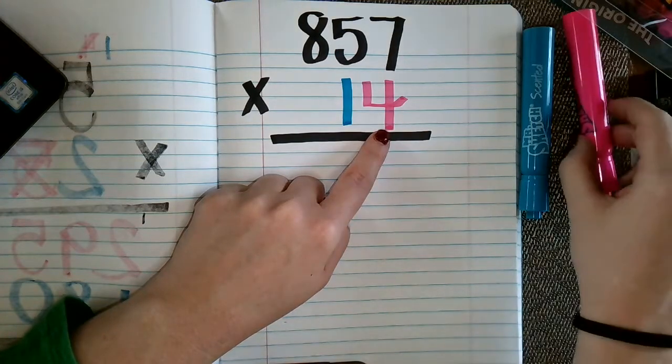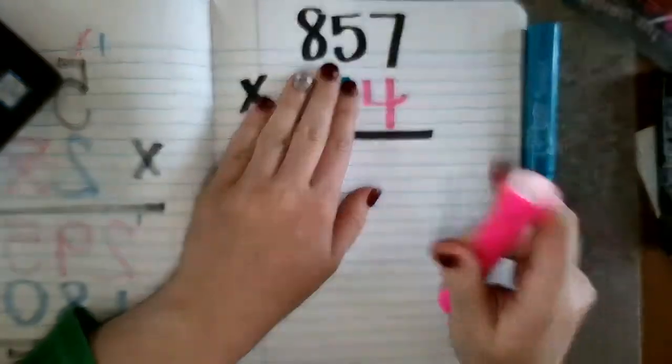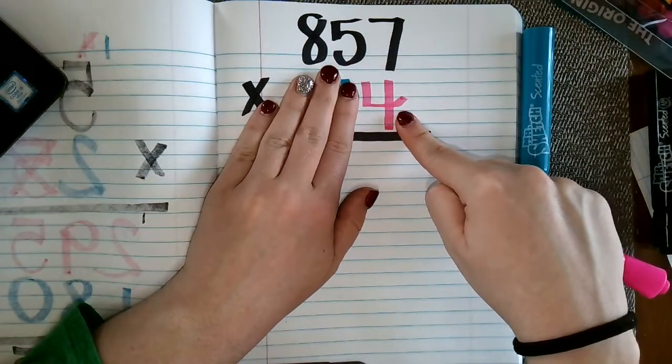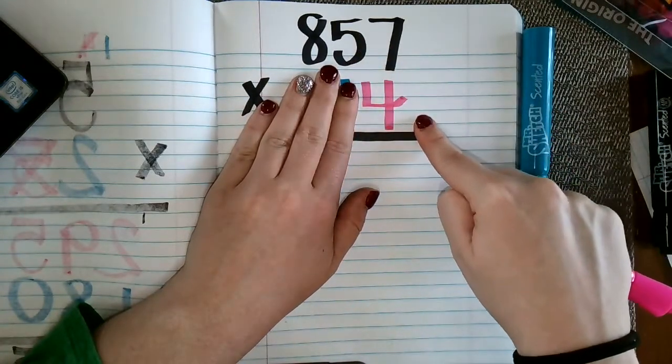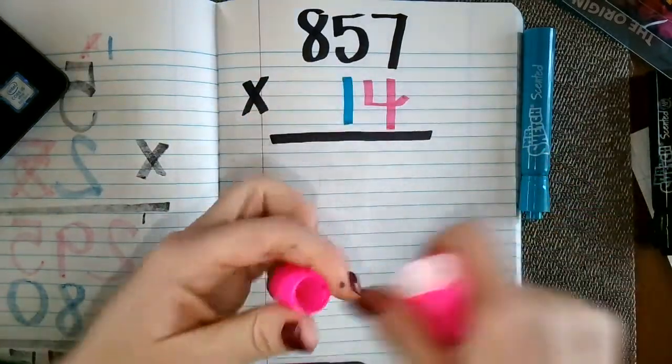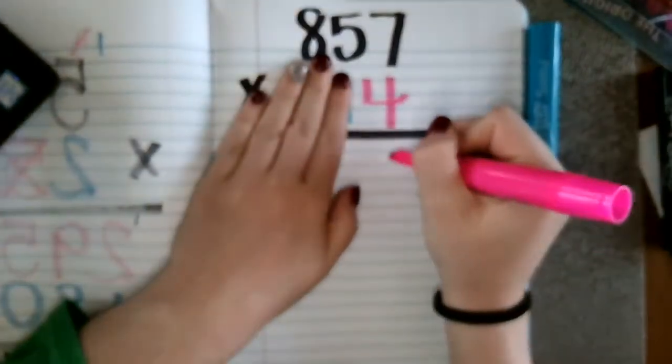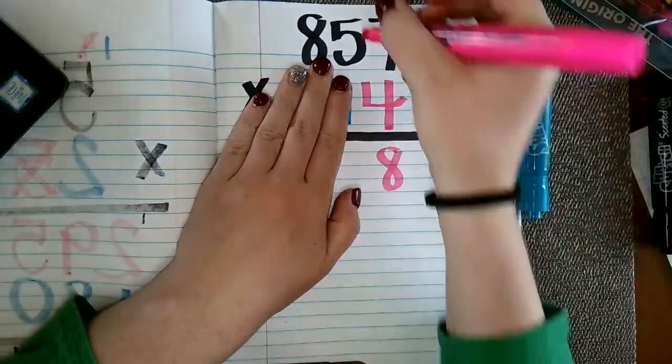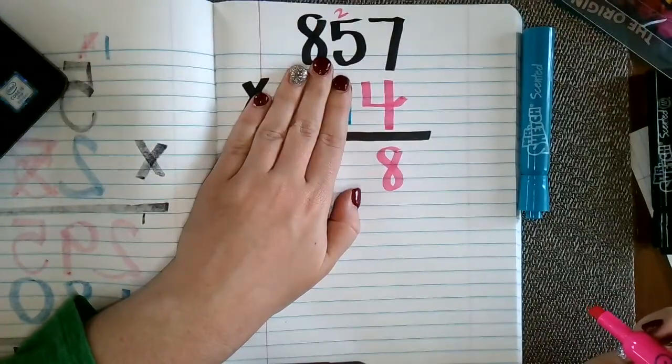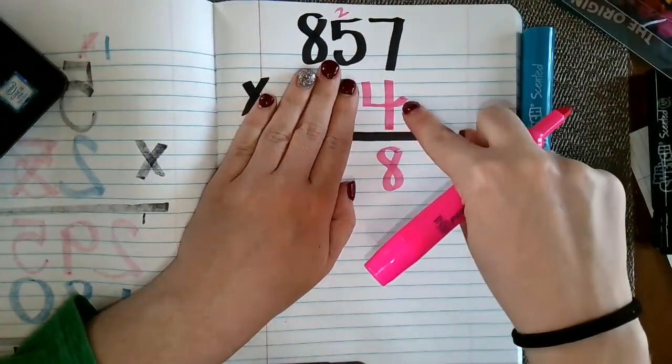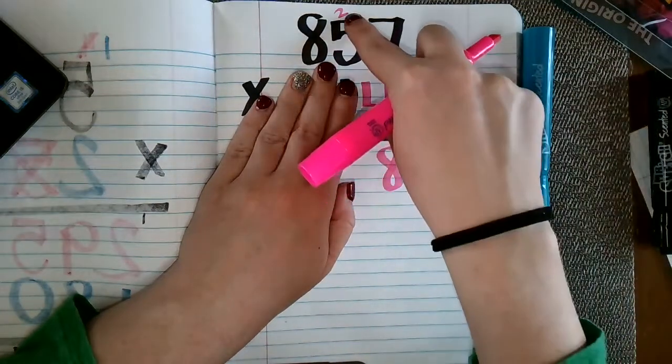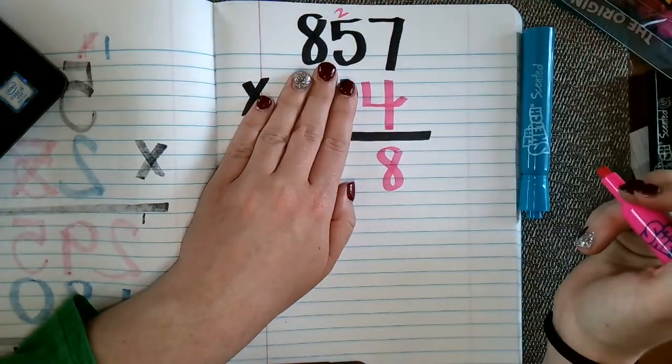So I am going to look at this as 857 times 4. Okay, so what is 857 four times? So I know that 4 times 7 is 28. So I'm going to put the 8 down here and bring my 2 up for my tens place. I know that 4 times 5 is 20, and then I need to add that 2 from before.